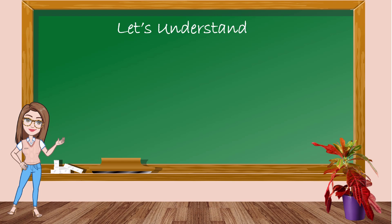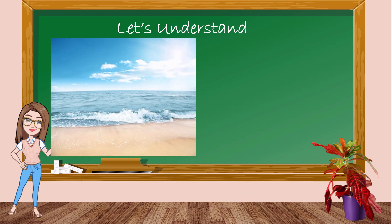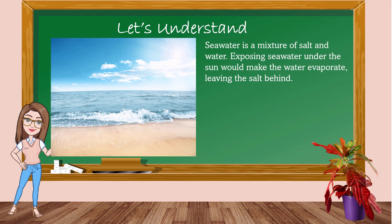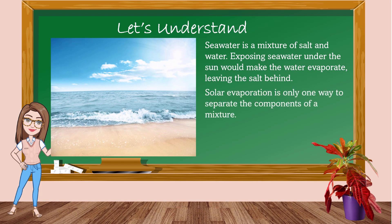Let's proceed to our concept. Seawater is a mixture of salt and water. Exposing seawater under the sun would make the water evaporate, leaving the salt behind. Solar evaporation is only one way to separate the components of a mixture. Can you think of other ways to do it?